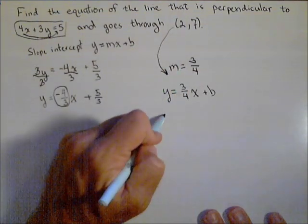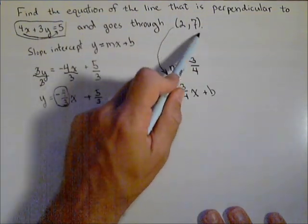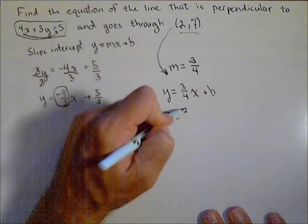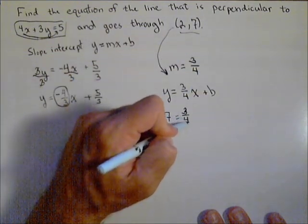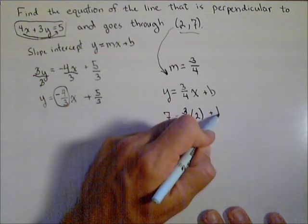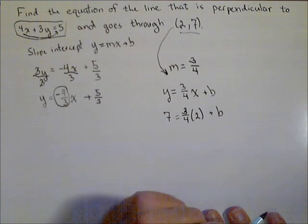Because we know that when y is 7, from this point, x has to be 2. So 3 fourths times 2 plus b is enough information to solve for b.